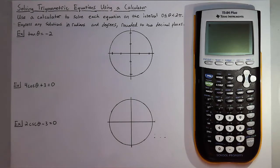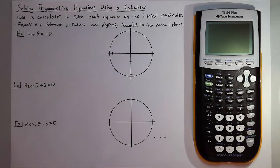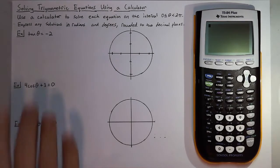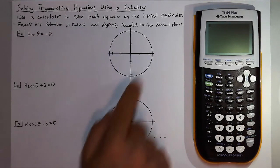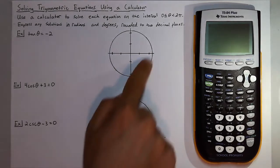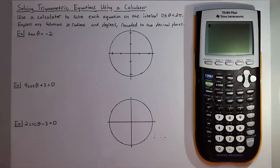In this video we are going to learn how to solve trigonometric equations using a calculator. The instructions say to use a calculator to solve each equation on the interval zero to two pi, so you don't need to worry about general formulas. We just need to figure out where along our unit circle we'll get this value and express any solutions in both radians and degrees rounded to two decimal places.